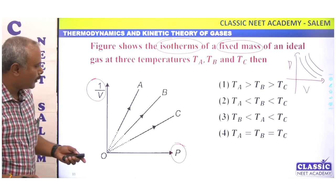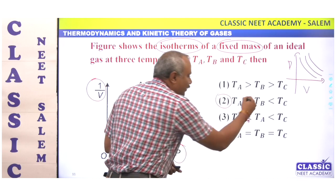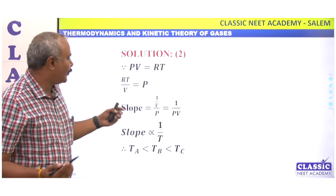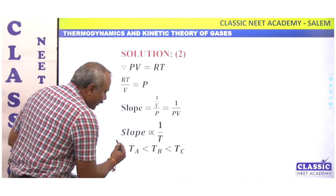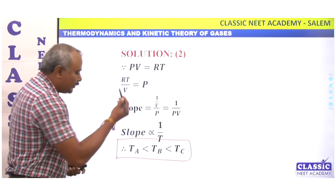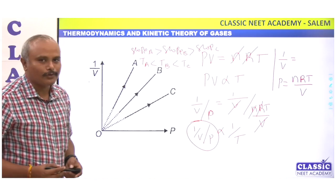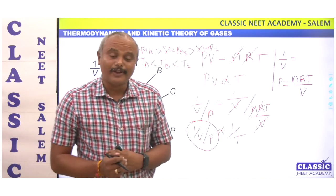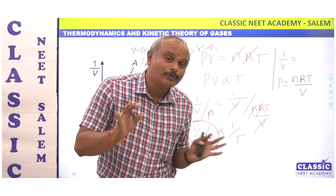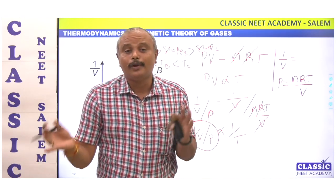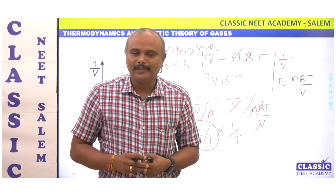Okay? So the answer is: temperature A is less than temperature B is less than temperature C. You can see from PV = nRT, substituting gives inversely proportional to temperature. It is a little tricky, but that is how to solve it. We will see it again. Thank you.